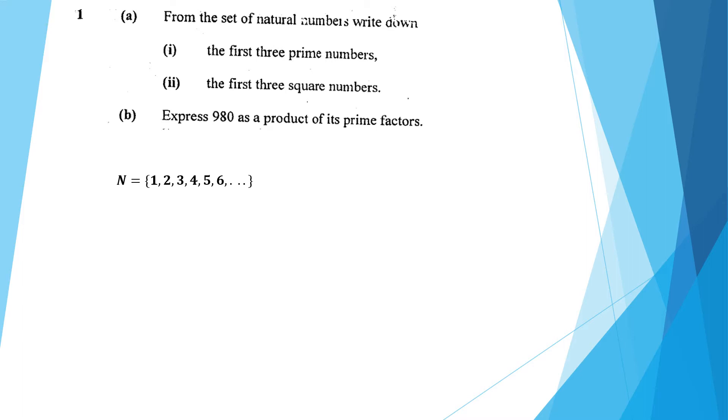A prime number is a number with exactly two divisors or factors, that is one and itself. One is not a prime number because it only has one factor.